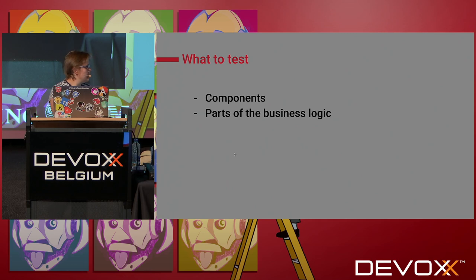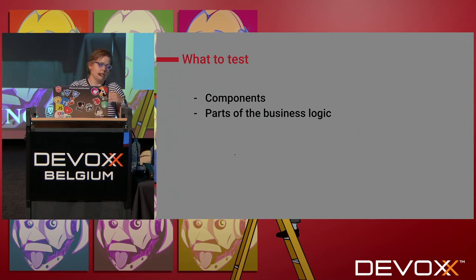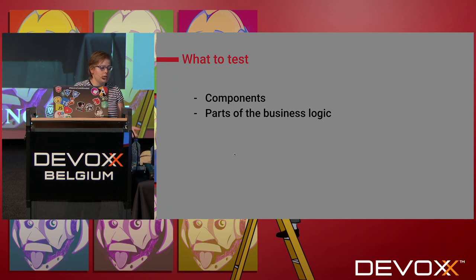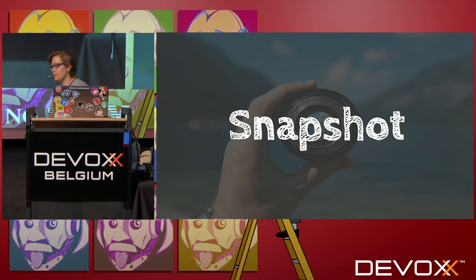So what will we test? Jest is mainly made for front-end and back-end code. It will test components and parts of business logic — like mapping things, whether the HTTP call is executed, whether calculations are right, and edge cases. We can do it with a snapshot.